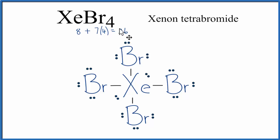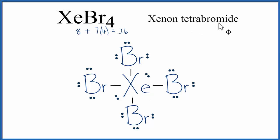So we're using all our valence electrons, the bromines have octets, the xenon has more than 8 — and that's okay. This is the Lewis structure for xenon tetrabromide. This is Dr. B. Thanks for watching.